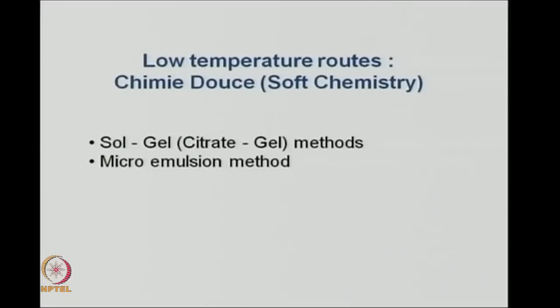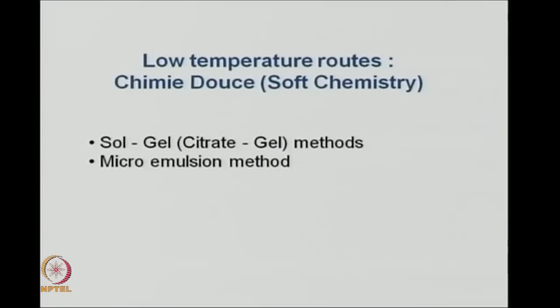Low temperature methods are basically bottom-up approaches. Another word used for low temperature methods is 'chimie douce,' which in French means soft chemistry. The first two methods I will discuss in this course are the sol-gel, which can also be called the citrate gel method depending on whether you are using citric acid as one of the polyhydroxy acids for the formation of the sol. Sol-gel is a general term for many of these low temperature processes. The other methodology I will discuss after sol-gel is the microemulsion method.